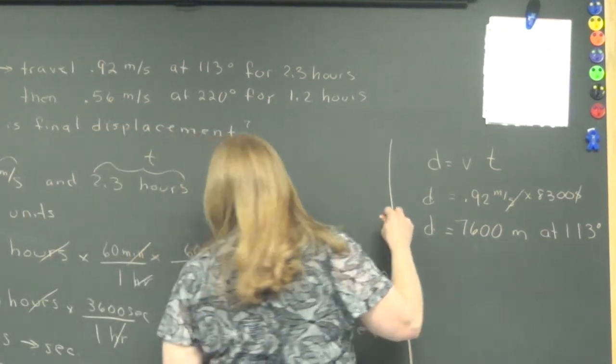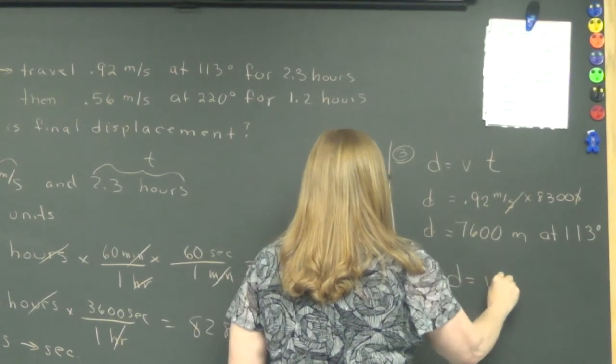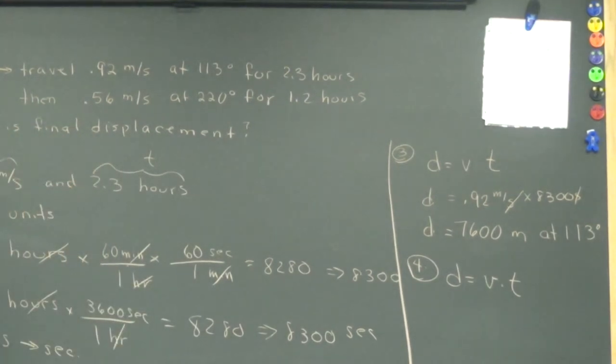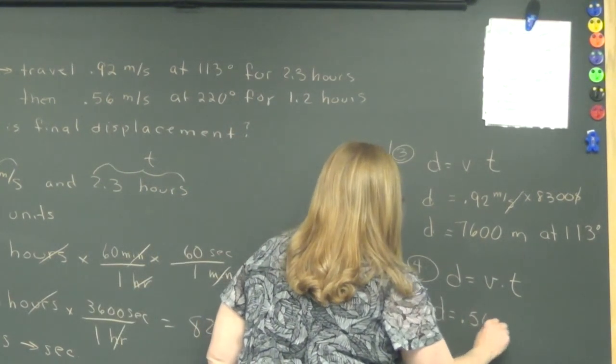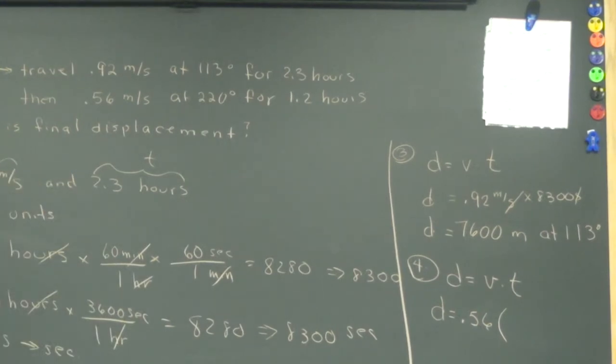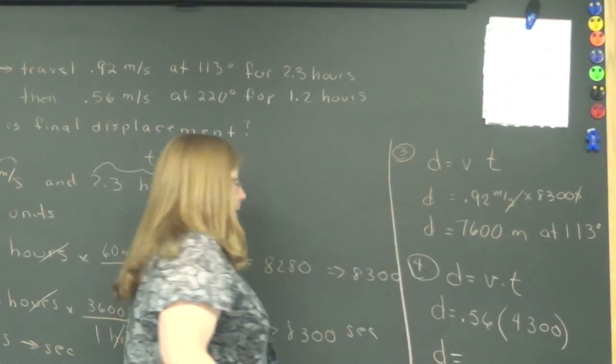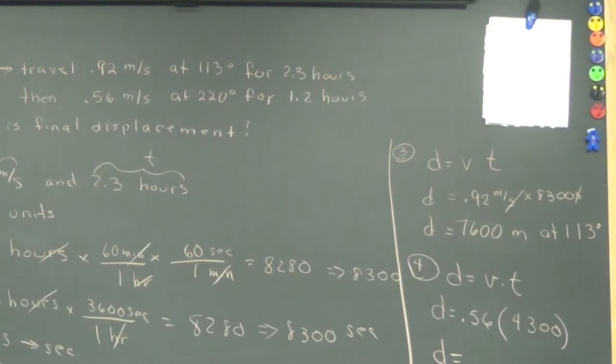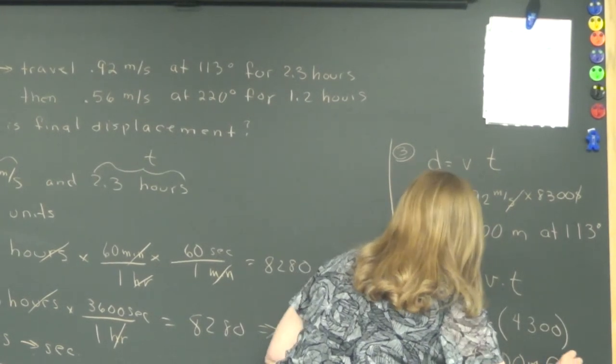That's the first leg of the journey. Step four is going to do the same thing for the second leg. Velocity is 0.56 and time we calculated is 4300. When you get that, how many meters? 2400, and that is meters at 220 degrees.